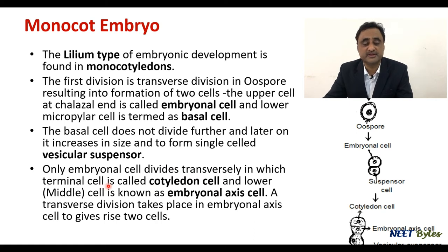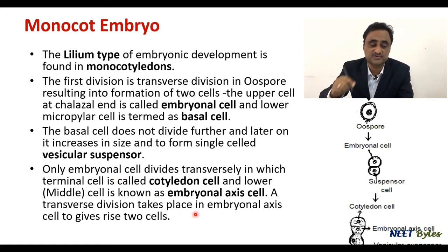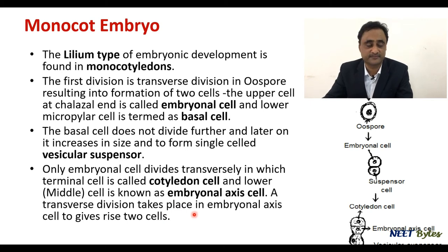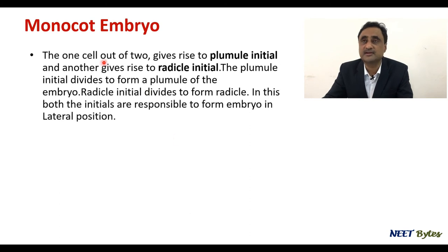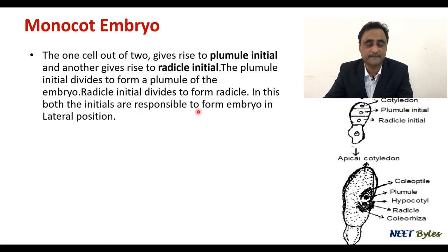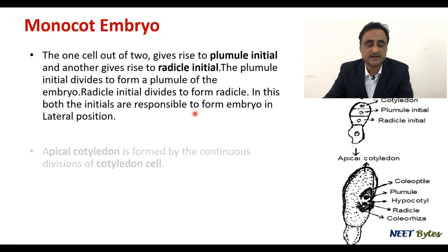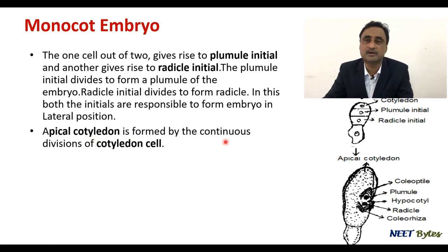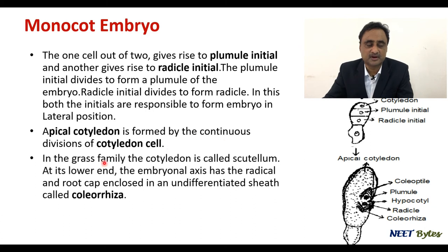The embryonal cell divides transversely. The cotyledon is placed at the terminal position — just the reverse of dicot, where it was lateral. In monocot, it is terminally placed, and this structure is called the embryonal axis. The transverse division in the embryonal axis gives rise to two cells: one cell gives rise to the plumule initial and the second gives rise to the radicle initial. The initials are responsible for forming the embryo laterally, and the apical cotyledon is formed by the continuous division of the cotyledon cells. In the Poaceae family, the cotyledon is called the scutellum.